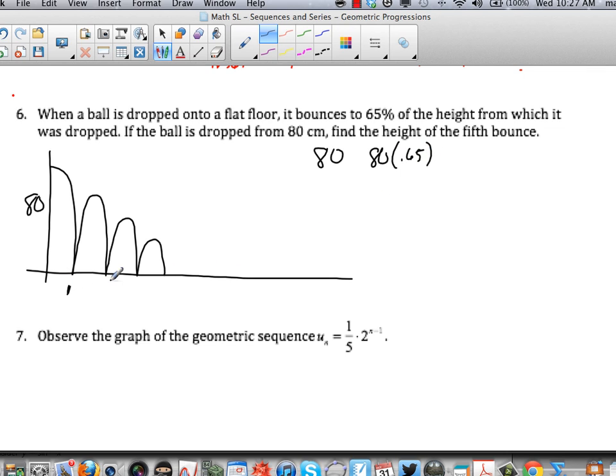Now that's the height of the first bounce. What's the height of the second bounce then? It's going to be 65% of this, isn't it? So it's going to be 80 times 0.65 times 0.65, or 80 times 0.65 squared. So immediately we can see that this sequence is geometric. What's the common ratio?